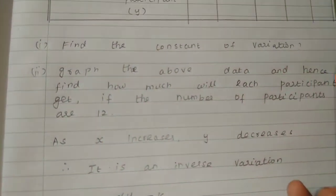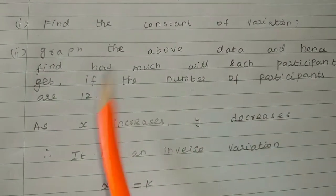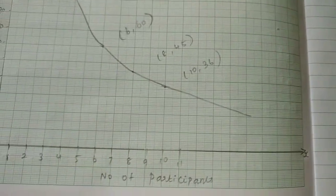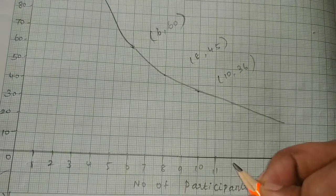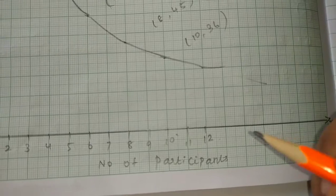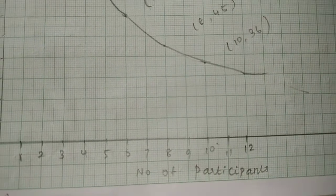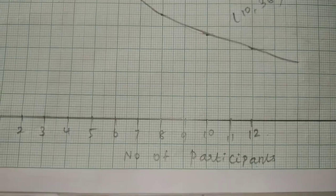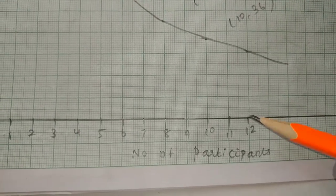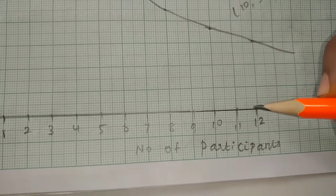Now the main question: the number of participants is 12. We need to find Y when X = 12.